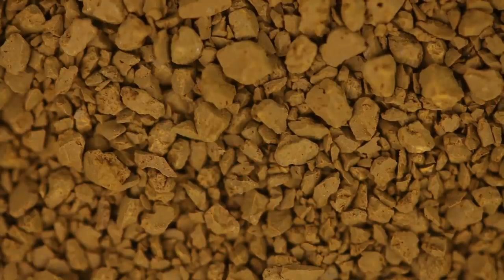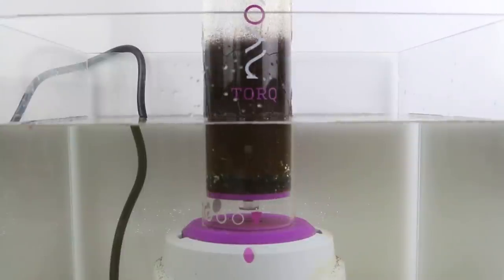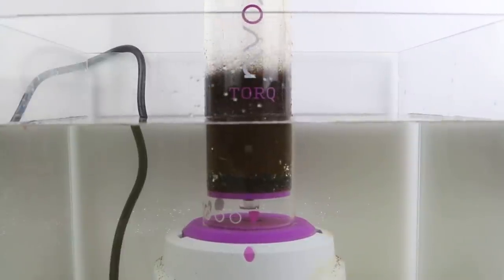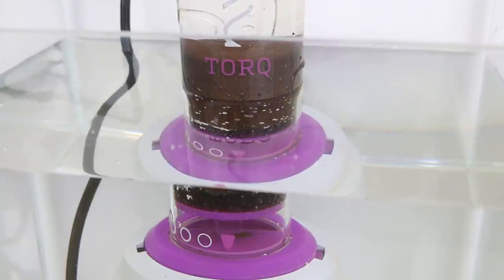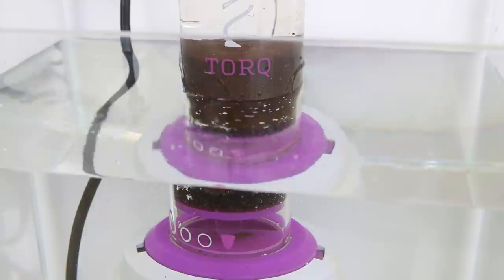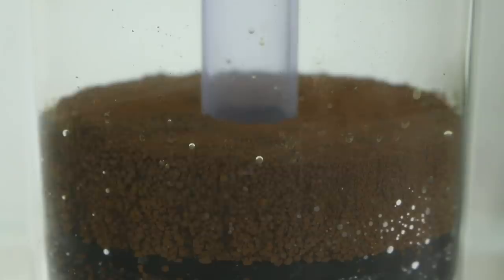GFO and nitrate removers can trap debris too. Media contactors make it easy to use granular filtration media. The contactor can be removed from the aquarium and taken to the sink for cleaning and media changeouts. Contactors also allow you to see if the media is getting dirty.